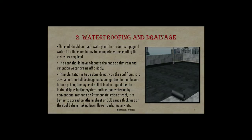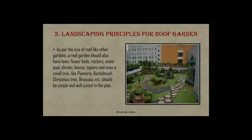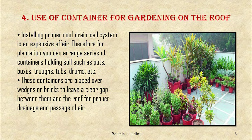Third, landscaping principles — as per the size of roof, like other gardens, a roof garden should also have lawns, flower beds, rockery, water pool, shrubs, bonsai, topiary, and even small trees like plumeria, bottlebrush, Christmas tree, and Brassia. Landscaping should be kept simple and well suited to the plan.